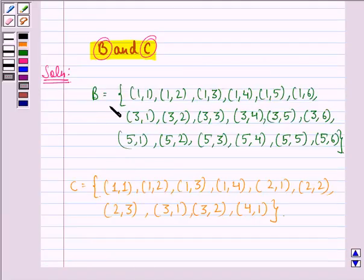So we see that this is the sample space for event B and this is the sample space for event C. Now we have to find the sample space for event B and C. Now B and C is B intersection C.